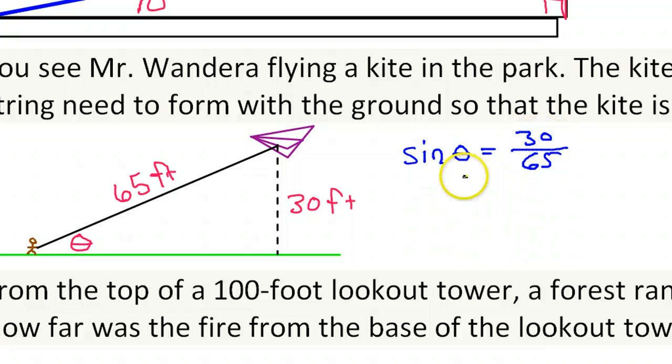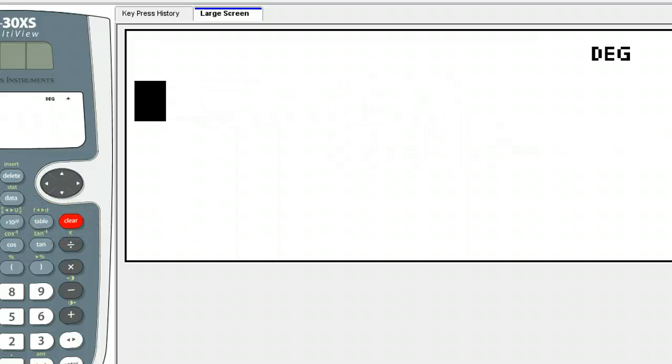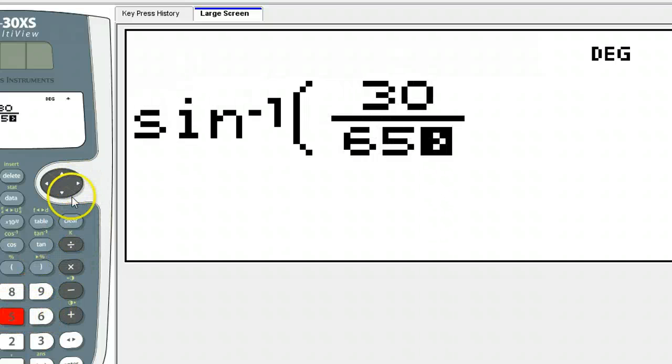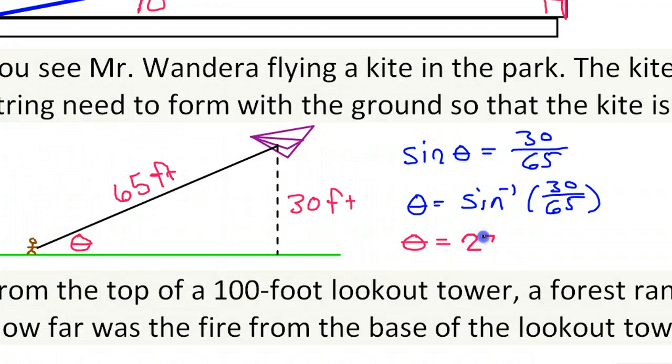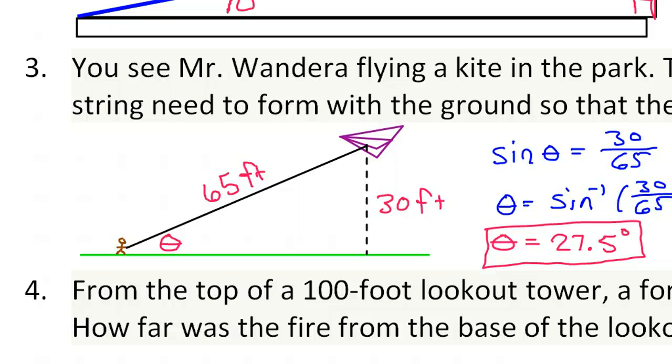Sine of theta should equal 30 over 65, opposite over hypotenuse. Now if you want to find the angle, what do you do? You use the inverse trig function. So theta will equal the inverse sine of 30 over 65. And then you can just put that in your calculator. So we'll do second sine for the inverse sine of 30 over 65. So that's 27.5. Got to round up. And this is degrees because we're talking about an angle. So there's your answer to number three.